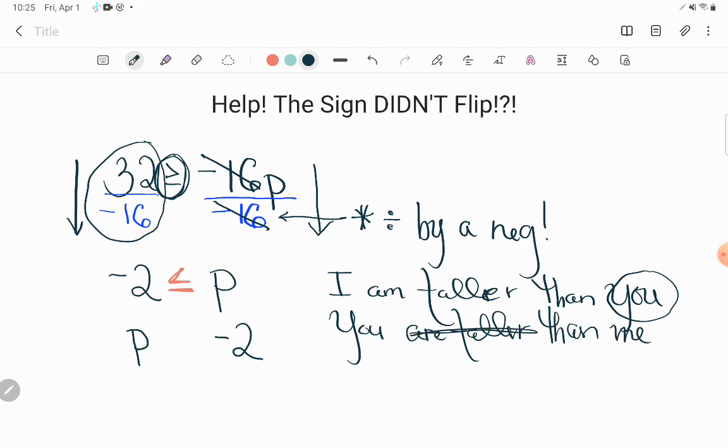So the deal is if I flip the you and me, the I and you, I need to also flip the word that describes our relationship. I need the opposite relationship. It wouldn't be taller. It would be shorter. If I am taller than you, then you are shorter than me. This is a principle we understand.